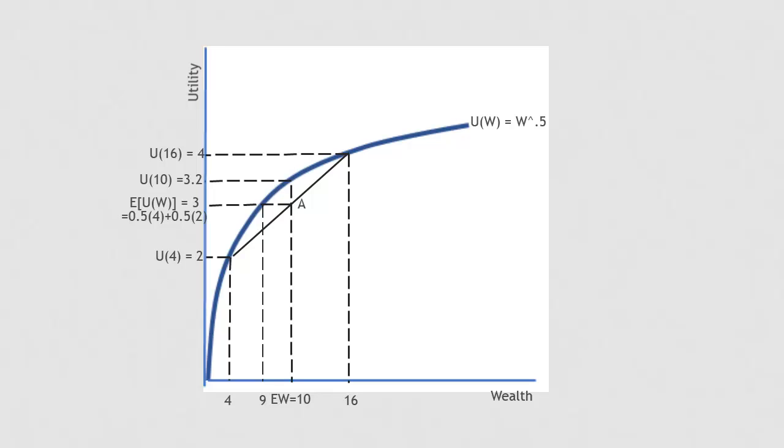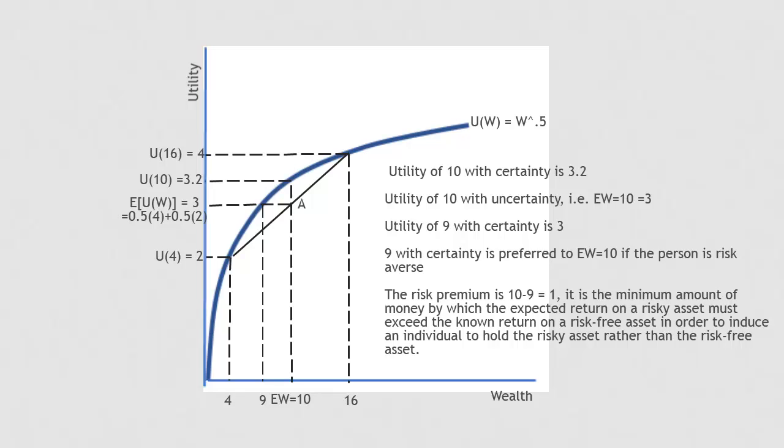The difference between the uncertain wealth of $10 and the certain $9 is called the risk premium. In this case, the risk premium is $1. If the value of the uncertain asset exceeds the value of the certain asset by $1 or more, the person would be willing to hold the risky asset. Risk premium varies with the amount of wealth, by the way. It's not always $1.